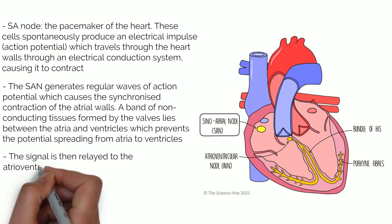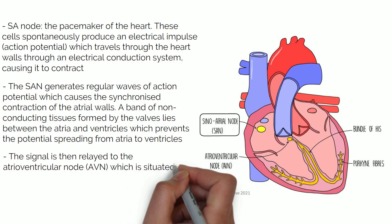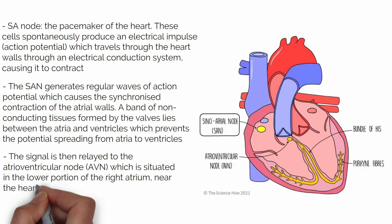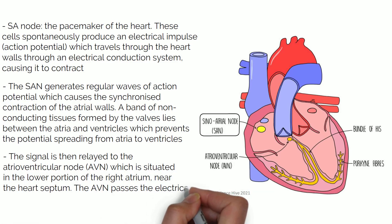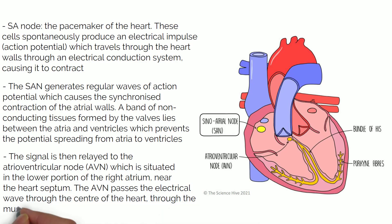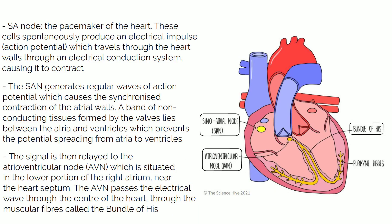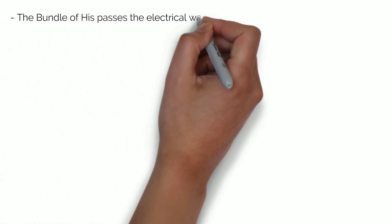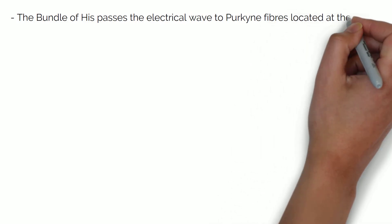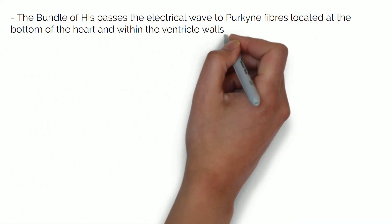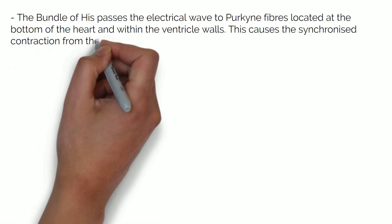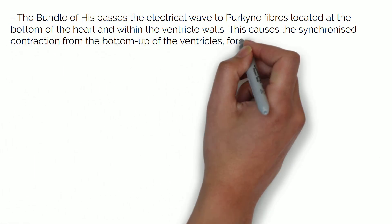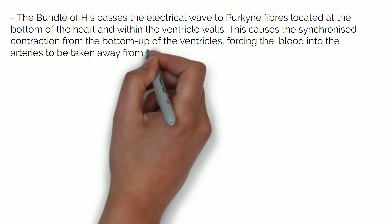The signal is then relayed to the atrioventricular node, or AVN, which is situated in the lower portion of the right atrium near the heart septum. The AVN passes the electrical wave through the centre of the heart through muscular fibres called the bundle of His. There is a delay in this relay to ensure the atria empty their blood. The bundle of His passes the electrical wave to the Purkinje fibres located at the bottom of the heart and within the ventricle walls, causing synchronised contraction from the bottom up of the ventricles, forcing blood into the arteries to be taken away from the heart.